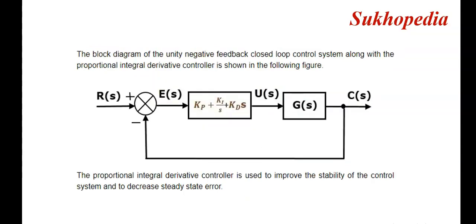The block diagram of a unity negative feedback closed-loop control system with the PID controller is shown in the following figure. Here R(s) is the input response, E(s) is the error, and this block is the PID controller: kp + ki/s + kd·s. G(s) is the open-loop transfer function, C(s) is the output, and the negative sign shows the negative feedback system. The PID controller is used to improve the stability of the control system and to decrease steady-state error.